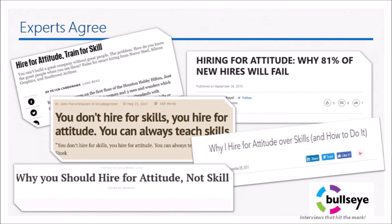Experts agree that you should hire for attitude but train for skills, but that's simplistic. Behavioral interviewing is also popular, but that is only about behaviors. Others use the KSA model — Knowledge, Skills, and Abilities — for scoping the job with a job description, job scorecard, or job posting. These articles highlight the need to focus on behaviors, but clearly we need a balanced approach for evaluating candidates.